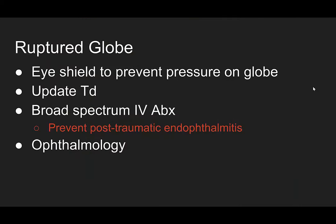For a ruptured globe, you want to make sure to put an eye shield over that eye to prevent any pressure on the globe. You want to update the patient's tetanus and then give them broad spectrum IV antibiotics — and I'm talking big guns. At our shop, this is vanc and cefepime. The reason for this is because it prevents post-traumatic endophthalmitis. What's so bad about endophthalmitis is that not only can you lose vision in the affected eye, but you'll develop an autoimmune response that will attack the other eye and you'll end up blind in both. And of course, ophthalmology has to be made aware of this patient.